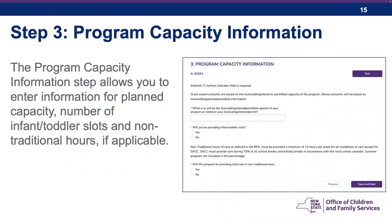Step three is program capacity information. This step allows you to enter information for planned capacity, number of infant-toddler slots, and non-traditional hours, if applicable. For some, this information will be pre-populated. Ensure it is correct and enter any missing information. If your program will be providing non-traditional hours, enter your hours of operation and click the Save and Next button.